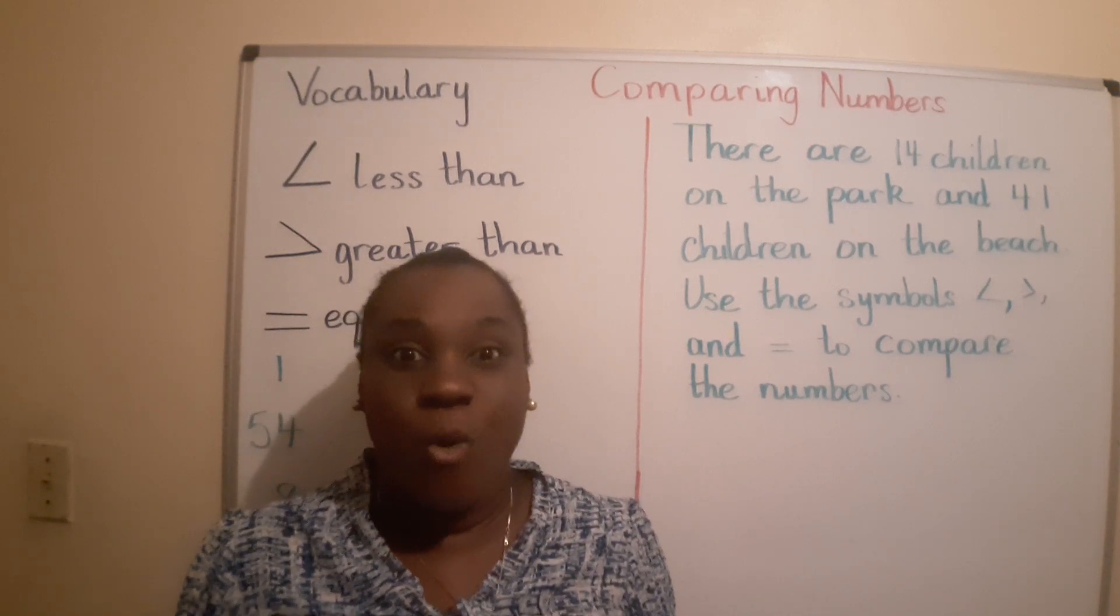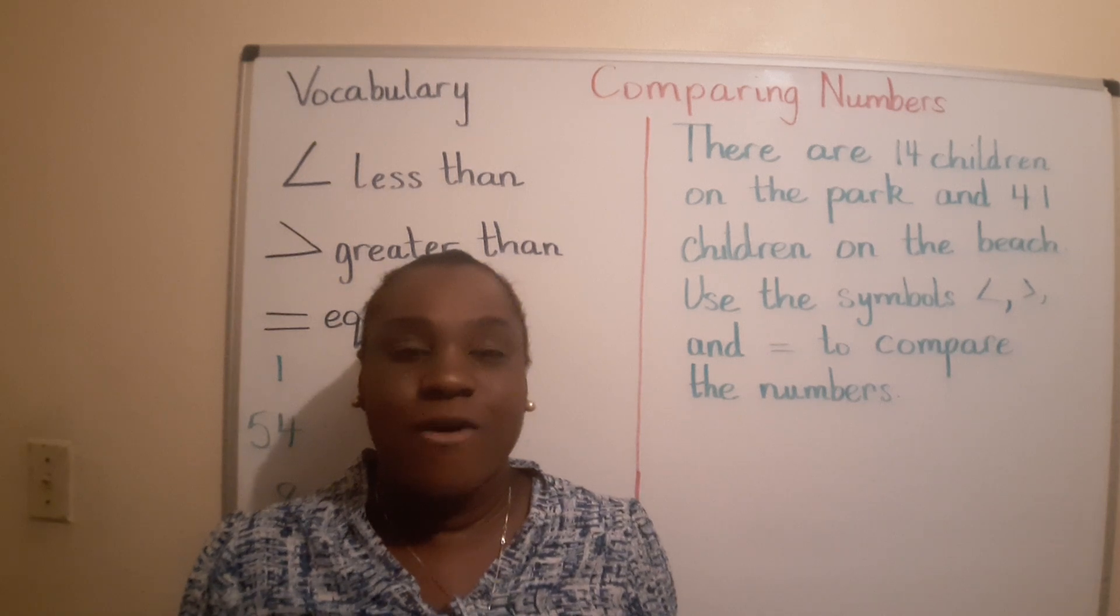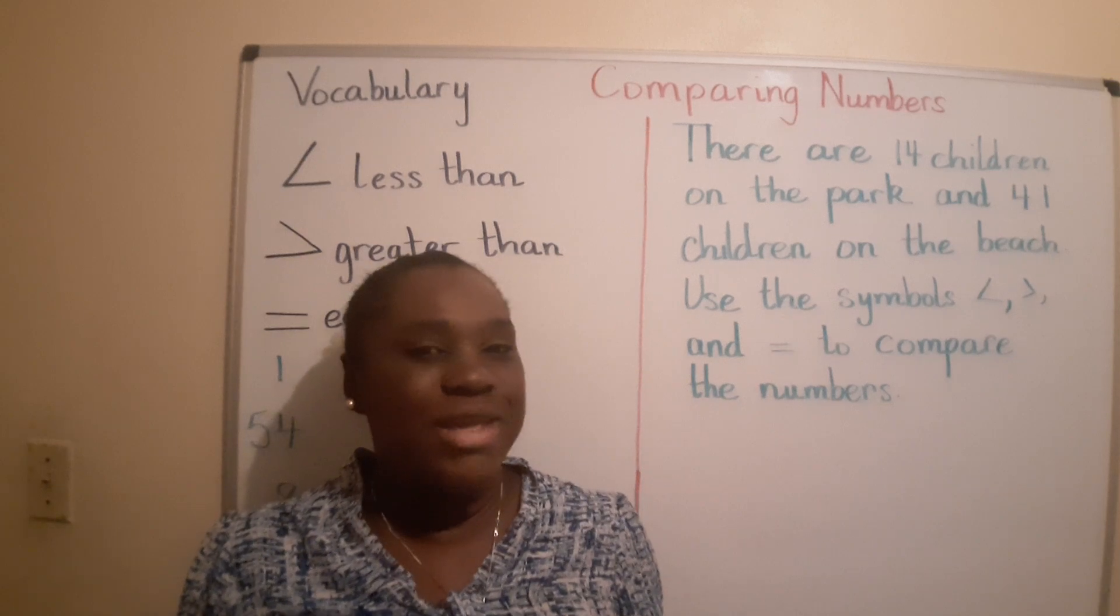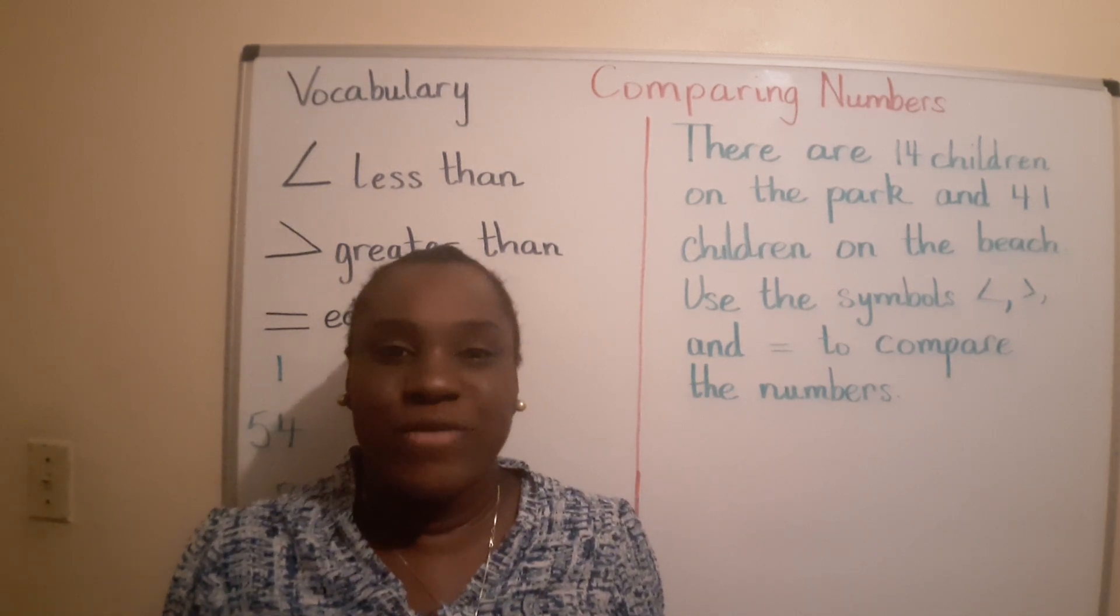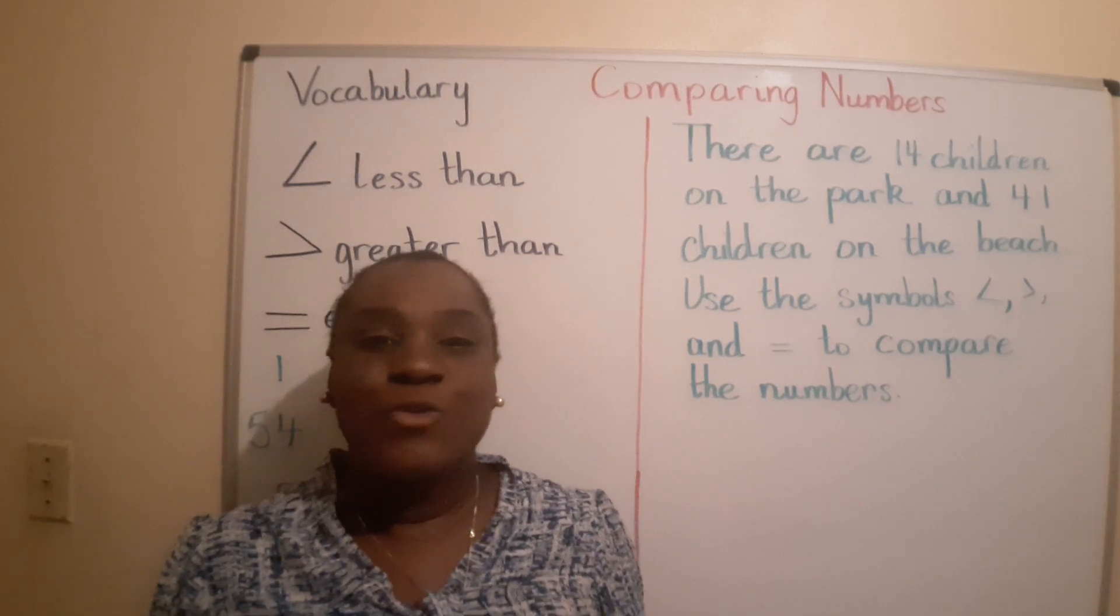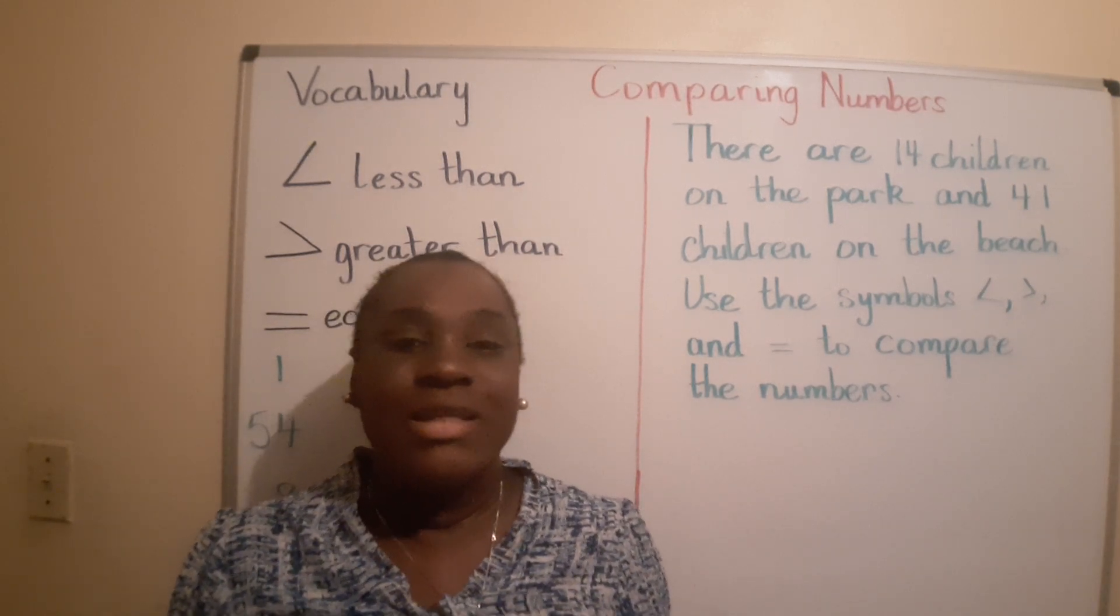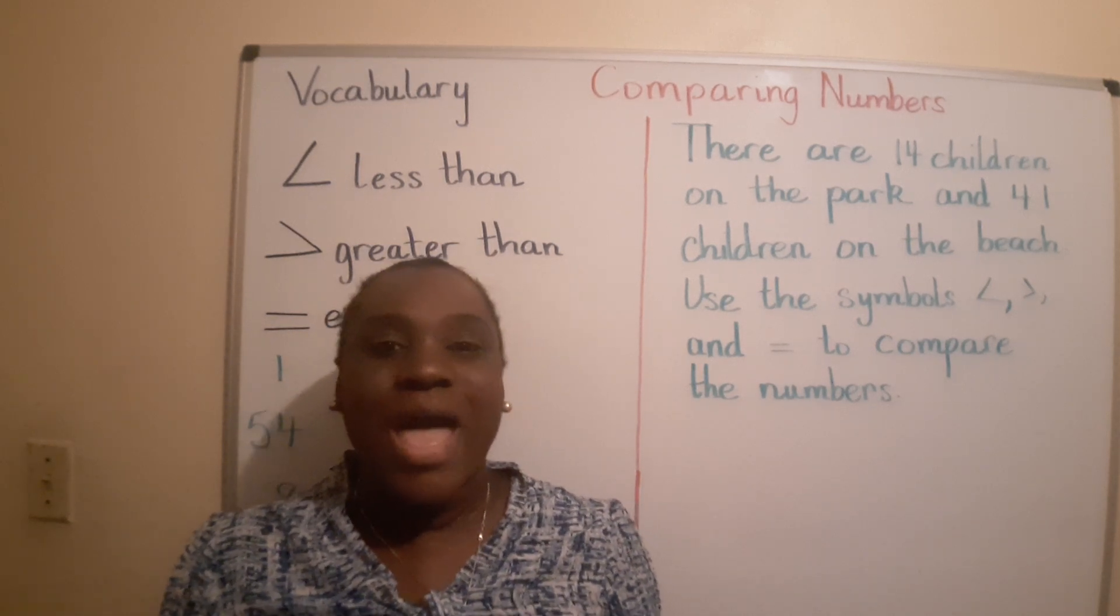Now here's the real warm-up part. Let's count backwards from 40 to 0 in fives. Are you ready? Let's go. 40, 35, 30, 25, 20, 15, 10, 5, 0. Excellent.